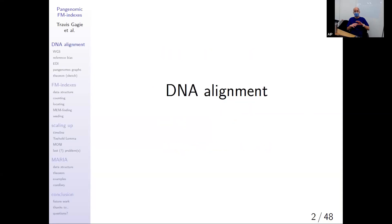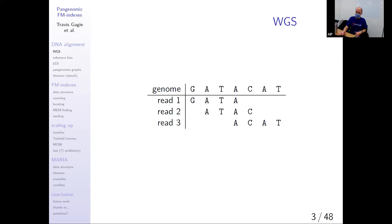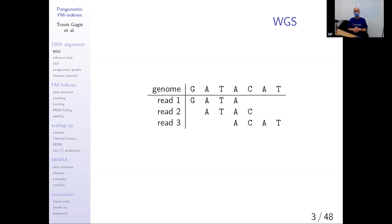FM indexes are used for DNA alignment. These days, whole genome sequencing is increasingly used in medicine and biological research. You send away a saliva or blood sample, it goes into a machine called a sequencer. Most of the market share is still held by Illumina, so most sequencing is what's called short read sequencing. It doesn't produce your whole genome — about three billion characters — it produces little chunks called DNA reads, about 100 to 200 characters.